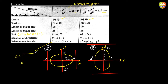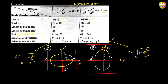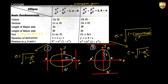For the eccentricity: for standard form 1, e = √(1 − b²/a²), whereas for standard form 2, e = √(1 − a²/b²). However, irrespective of whichever case you take, eccentricity will always be √(1 − (semi-minor axis)²/(semi-major axis)²). This is a universal formula which you can apply to any type of ellipse.